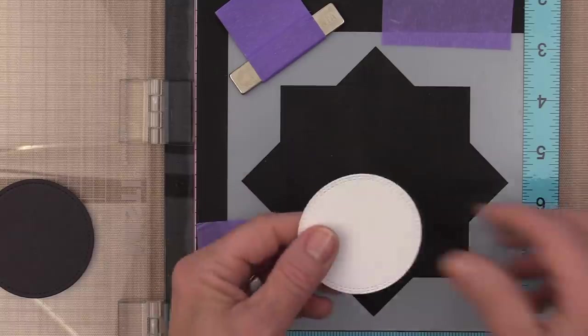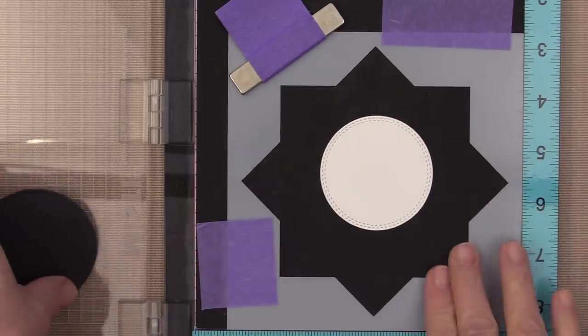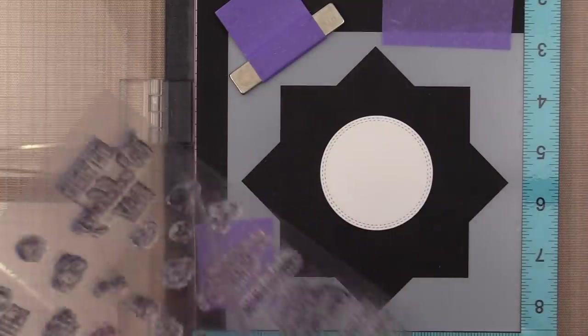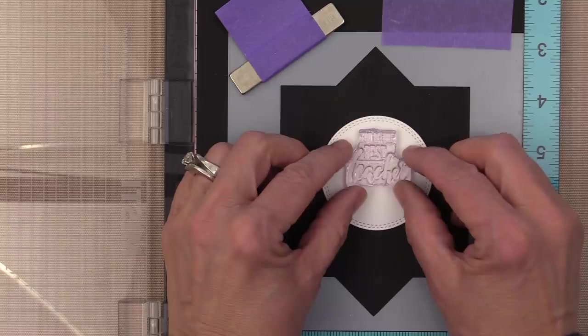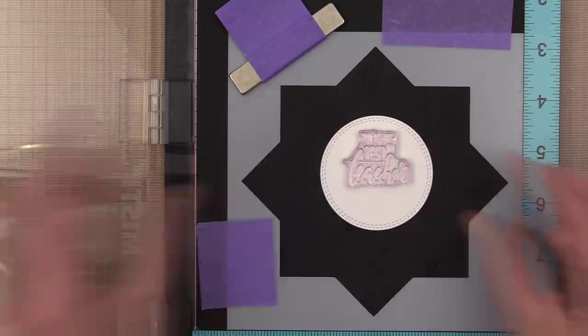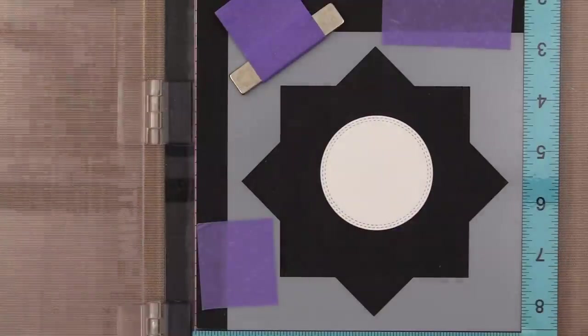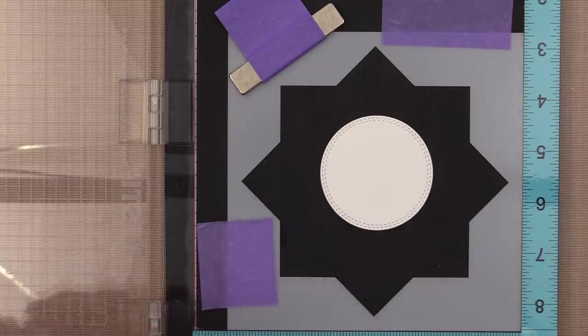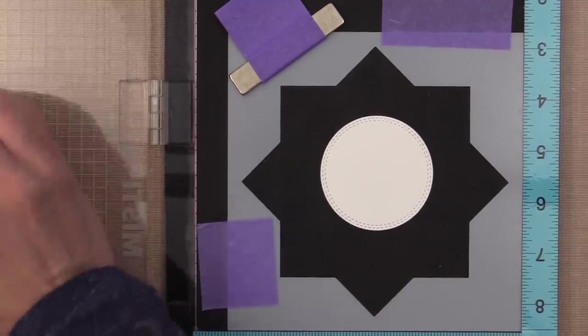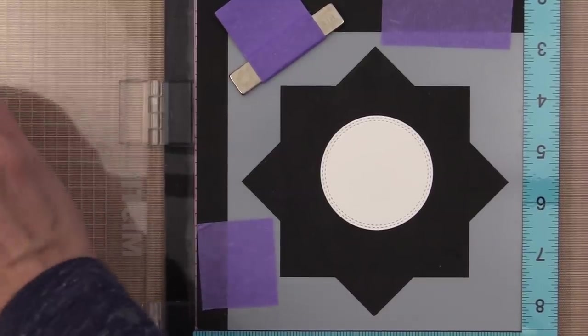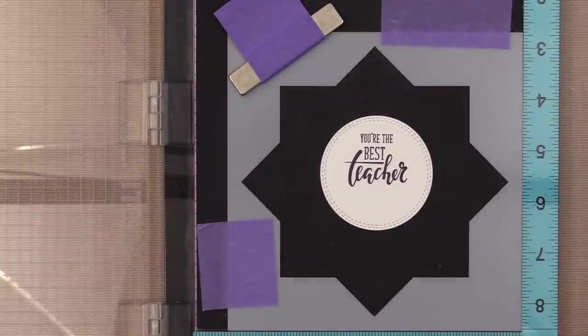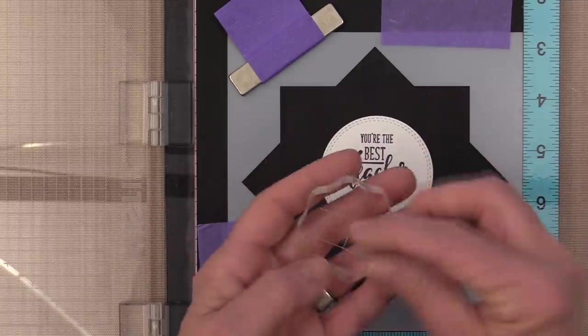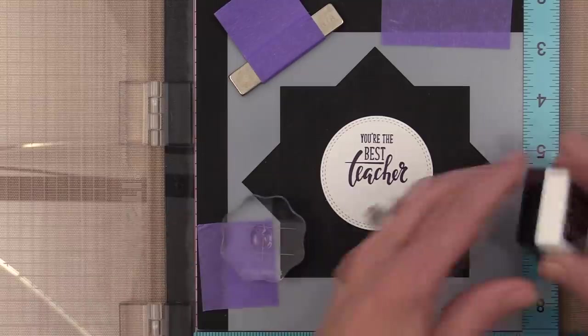Now to stamp my greeting, I'm going to put a little bit of the Gina K Designs dot adhesive runner on the back of that white circle. That white circle was cut out using the thermal web small circle dies. I'm going to use the teacher greeting from this set and stamp it up toward the top of the circle leaving a little bit of space at the bottom so I can stamp some tiny apples on there. I'm going to use black onyx to stamp this and then once it's stamped I'm going to hand stamp a few of the little apples from that set. Again this is the reasons to celebrate set by Gina K Designs and it mixes and matches so well with so many of your other stamp sets.